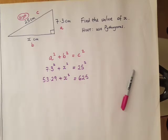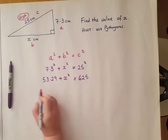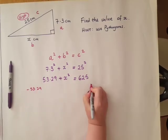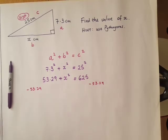The goal is to get x squared by itself, so I'm going to subtract 53.29 away from both sides. So I'm going to take it away, so here we go.